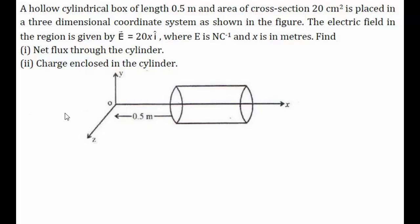Hello everyone, let's solve this question from the chapter Electric Charges and Fields. Let's go through the question and try to understand what is given. A hollow cylindrical box of length 0.5 meter and area of cross-section 20 centimeters square is placed in a three-dimensional coordinate axis as shown in the figure.